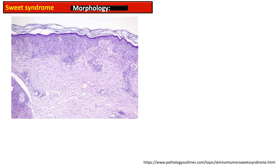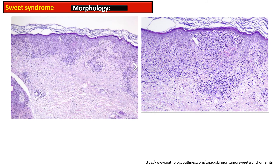The histopathological features of Sweet syndrome are diagnostic. The epidermis is usually normal, but sometimes subcorneal pustulation is also seen. There is massive edema of the papillary body and dense leukocytic infiltration that shows a starburst pattern in the mid dermis. This infiltrate is composed of neutrophils and occasionally eosinophils and lymphoid cells.